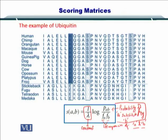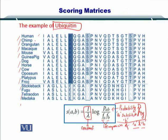Here is an example using a protein called ubiquitin. We have listed several ubiquitin sequences from humans, chimps, orangutans, and so on, and their sequences have been aligned with each other. As you can see, some amino acids are rarely substituted, some are completely conserved, and some others are changed or substituted.